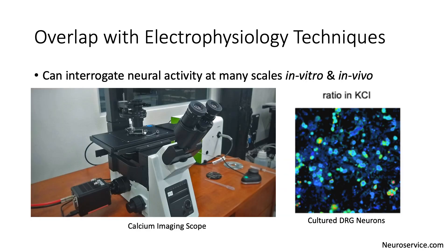Both calcium imaging and electrophysiological techniques allow you to interrogate neural activity at many scales in vitro and in vivo. With calcium imaging, in vitro experiments can be accomplished in cultured neurons or in brain slices by imaging the tissue under a microscope outfitted for calcium imaging, such as the one pictured on the left. In this example on the right, we are looking at cultured neurons from the dorsal root ganglion fluorescing after they were loaded with a calcium-sensitive dye.